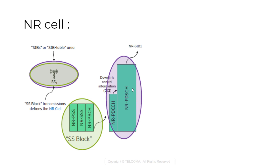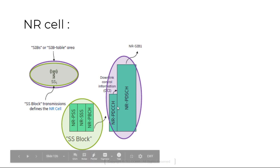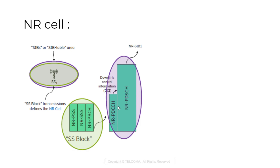With the downlink control information DCI, it has new radio PDCCH and new radio PDSCH. This is all contained in new radio SIB1.